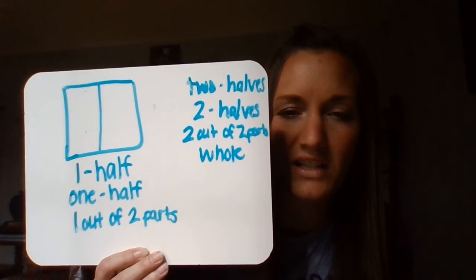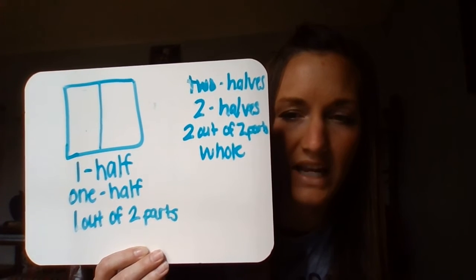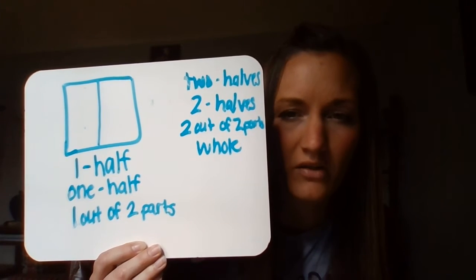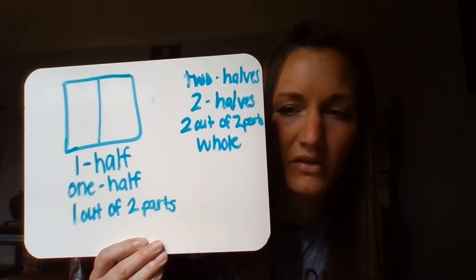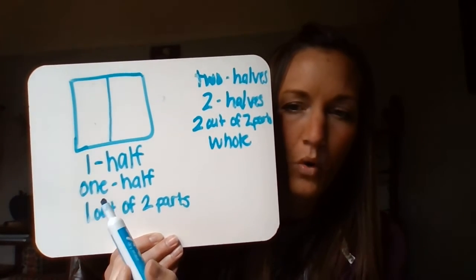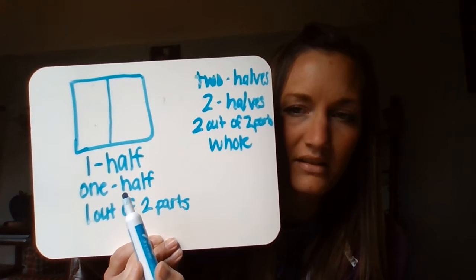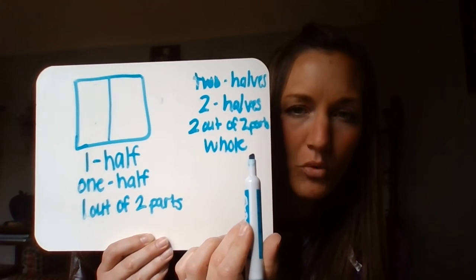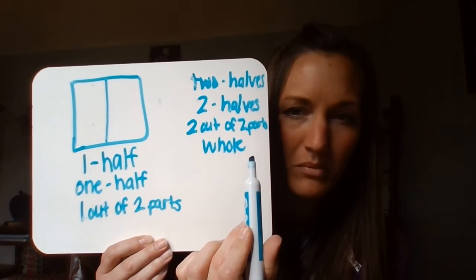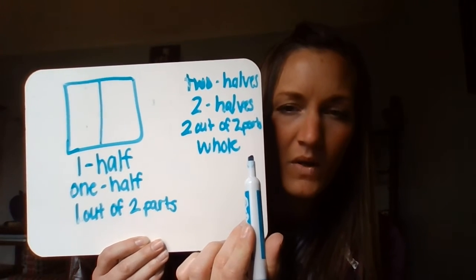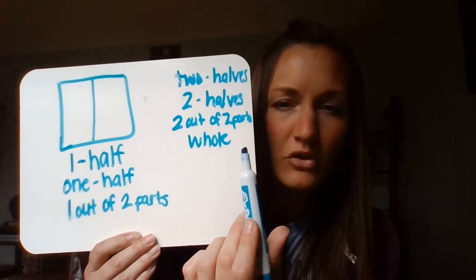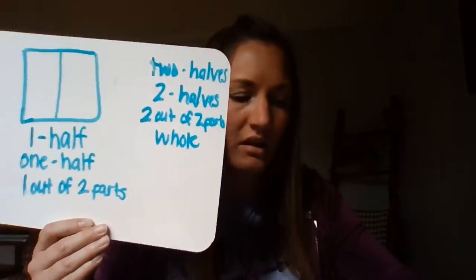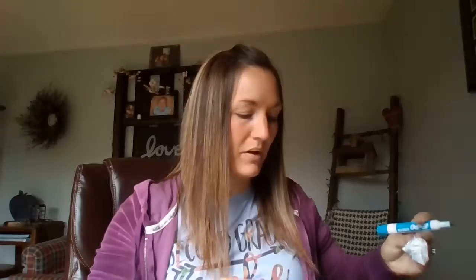So that's some ways that we can write the shares that we would have. If we're naming one part, it's this. If we're naming all parts, it would be this. So now we're going to try it with another shape.